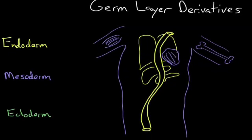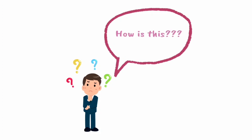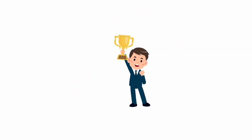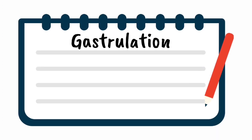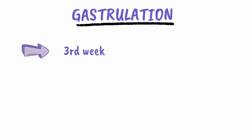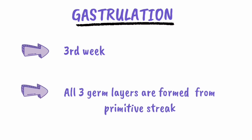The trilaminar disc has an ectoderm, mesoderm, and an endoderm. During the 3rd week of gestation, all three germ layers are being formed from the primitive streak.